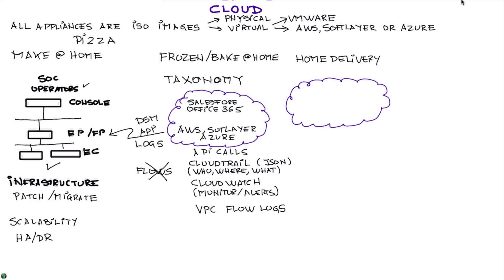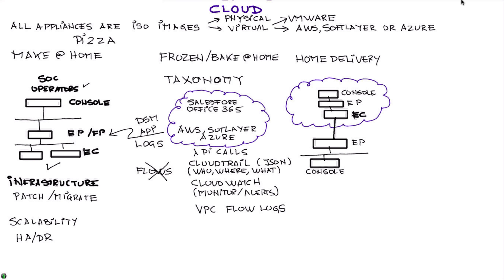Continuing the analogy — say I don't even want to bake the pizza; I want it delivered warm and ready to consume. This translates into deploying trusted event collectors — which, being virtual images, can even run on bare metal — on the cloud to collect logs from infrastructure residing there and feed them into my event processor and console locally. We have several customers doing that. Nothing also prevents having the console and event processor remotely, accessed via browser.